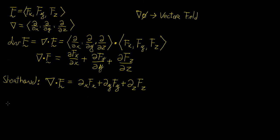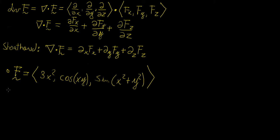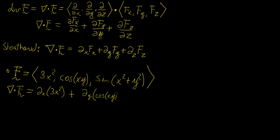Let's now work through some examples. Suppose we're given the vector field f = (3x², cos(xy), sin(x² + y²)). So the first thing we're going to do is find the divergence of this vector field. We're going to take the partial derivative with respect to x of 3x², then add the partial with respect to y of cos(xy), and then add the partial with respect to z of sin(x² + y²).